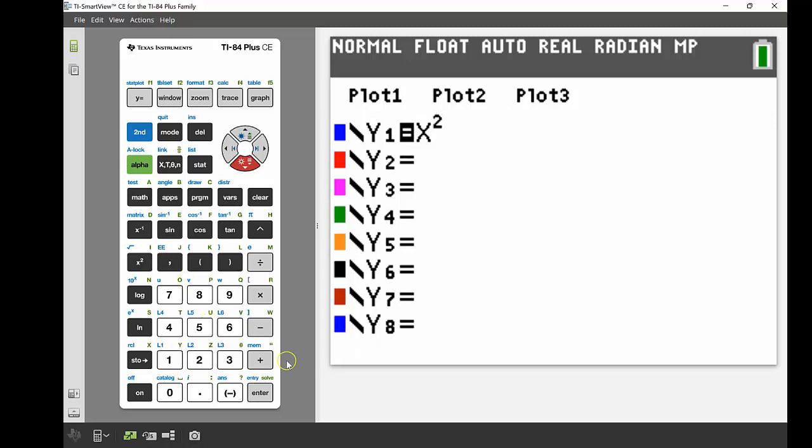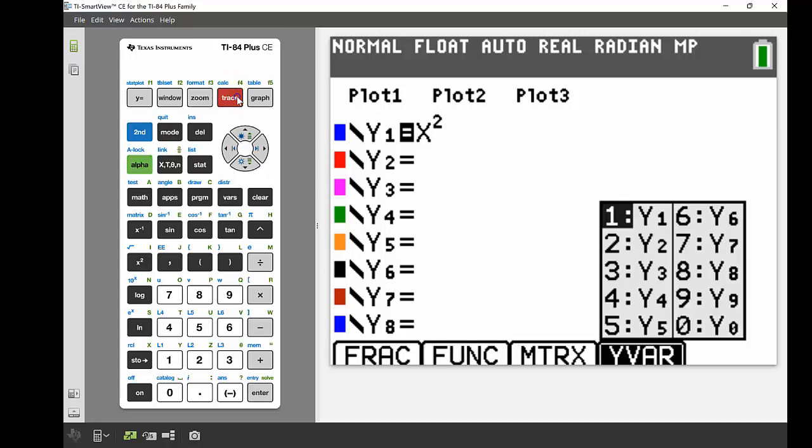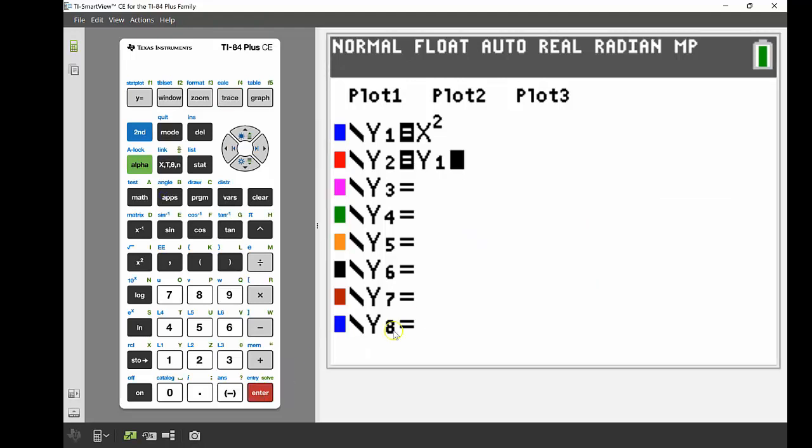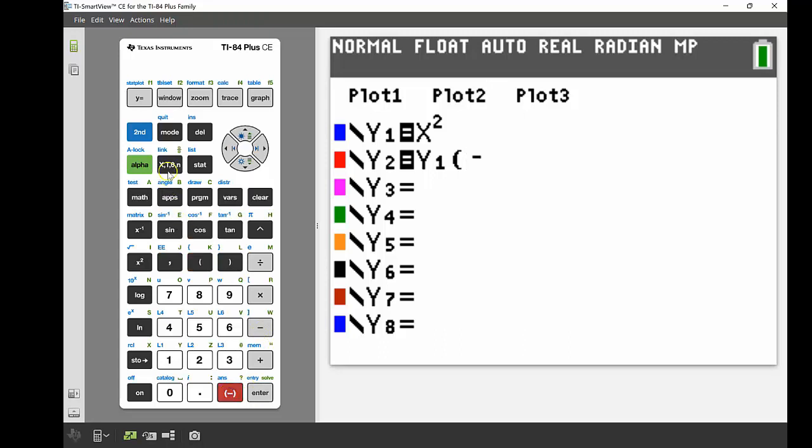Now the two transformations that I'm going to start off by looking at is firstly what happens if we have our y1. So I'm going to access my y1 in my function editor by going alpha and then pressing the trace button, which is that F4 quick keys, and this has all of my y variables in it. So I can pull in that y1 and now I can adjust my function that's written in my y1 spot into my y2. So in this one I'm looking at what happens if we take -x and plug that into our y1 instead of having positive x. So let's have a look.